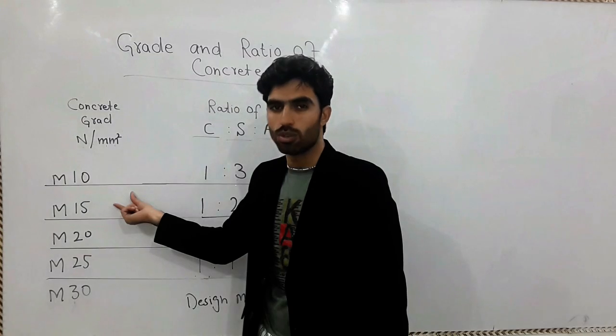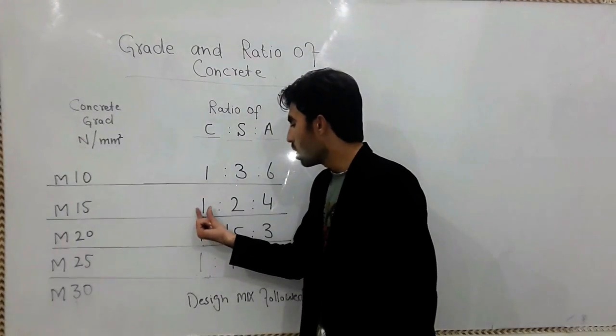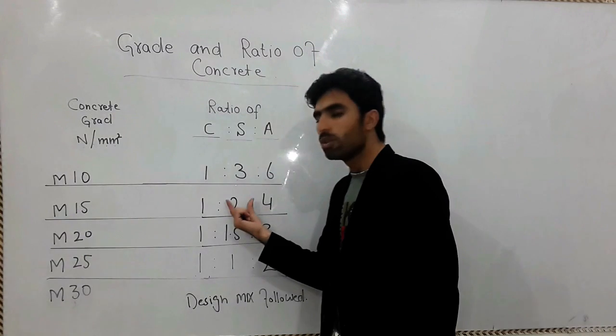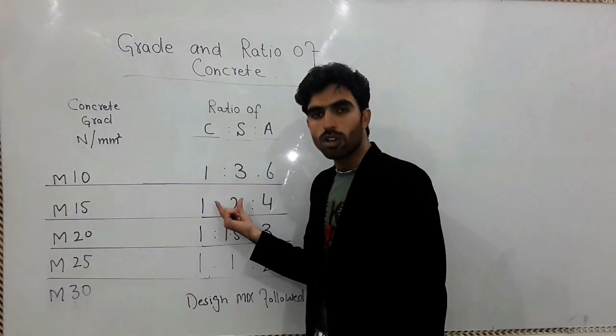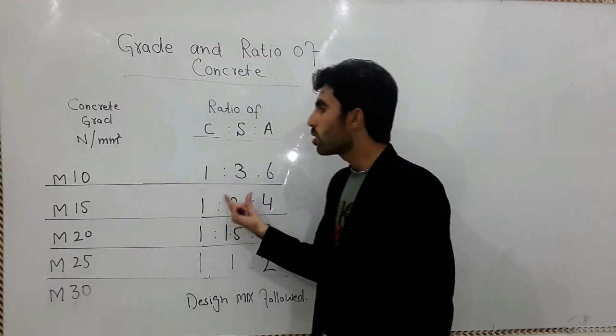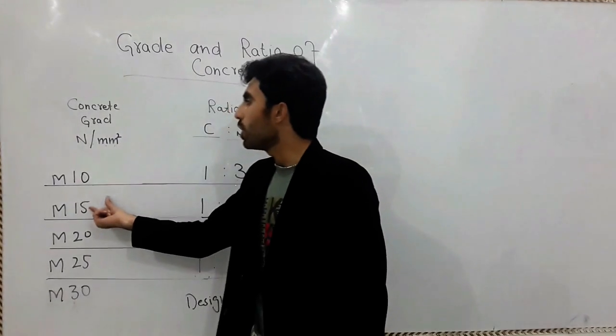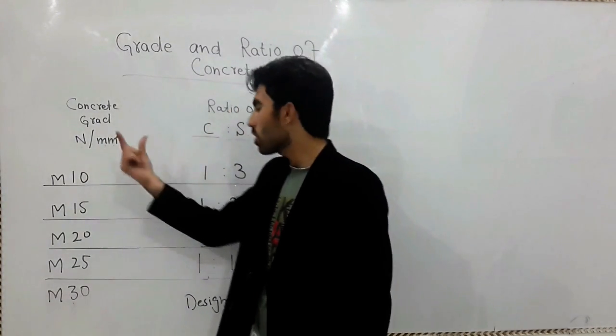So you must use 1:2:4. When you use this ratio for the concrete, it will give you 15 Newton per mm square compressive strength.